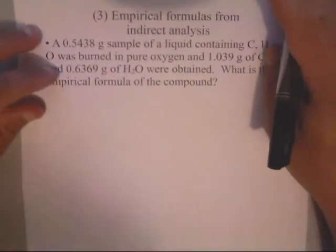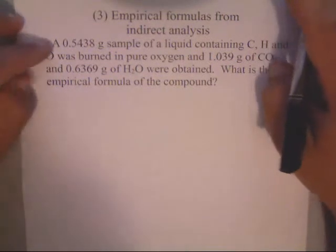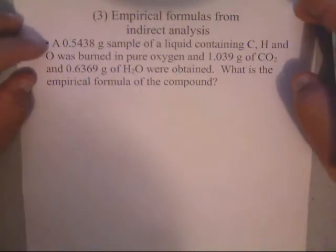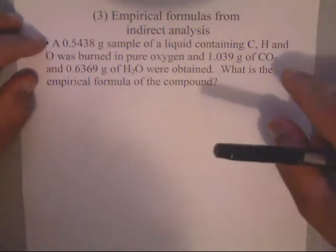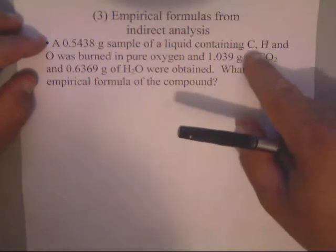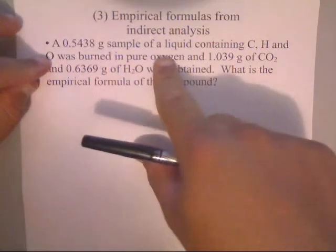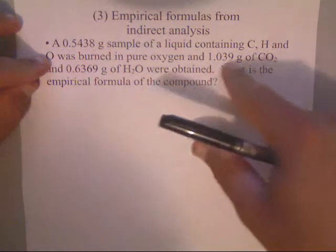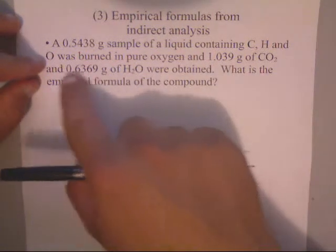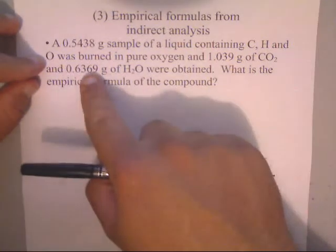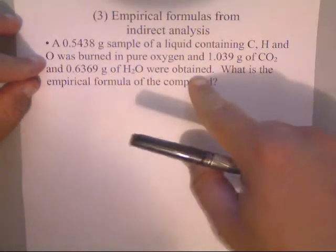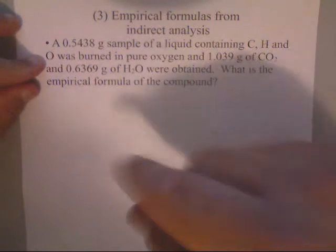In the beginning, they tell us that they've got a sample made up of three elements: carbon, hydrogen, and oxygen. They tell us they burned it in pure oxygen. And that 1.039 grams of CO2 and 0.6369 grams of H2O were obtained. That means they were produced. So basically, what they're saying is this.